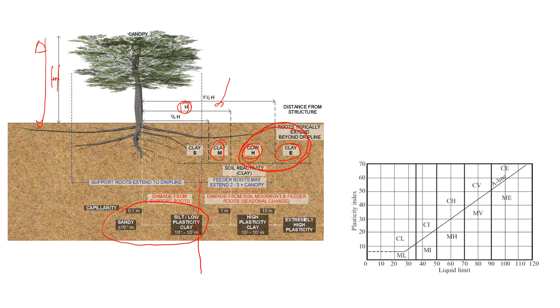If we have clay which is high plasticity, the distance should be about H. H is the height of the tree. If we have extremely high, this means that it's going to swell and shrink a lot. In this case, we need to take extra measures and it's better to have 1.5 value of H distance from the tree.